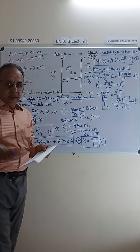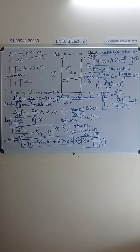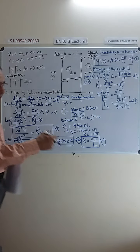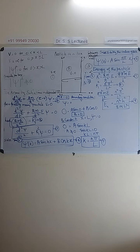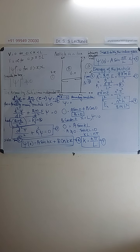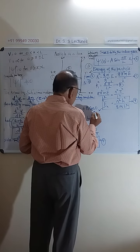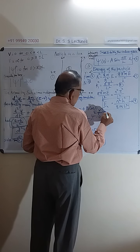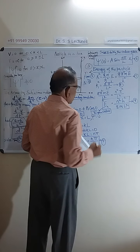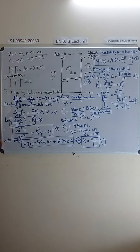For each value of n — integer 1, 2, 3, 4, etc. — there is a corresponding energy level. Each energy level corresponds to a wave function. Each value of n and its corresponding energy is known as an eigenvalue, and the associated wave function ψₙ is called the eigenfunction. This is the simple aspect of energy distribution, and now we have to determine the energy level diagram.